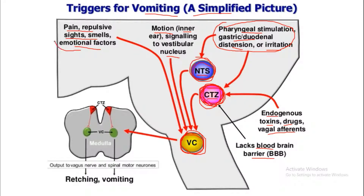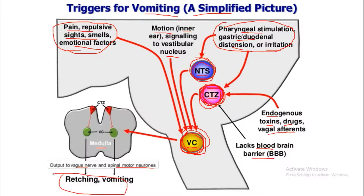There are two terms: nausea and vomiting. Nausea is the initiation of vomiting but without any food content coming out of the mouth — just the sensation without expulsion. Vomiting means actual food content coming out of the mouth. From the vomiting center, efferents go to the vagus nerve and spinal motor neurons. The vomiting center is located inside the medulla and produces retching and vomiting.